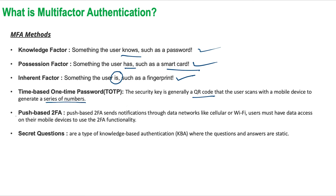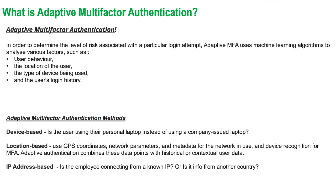Next is push-based 2FA, which sends authentication notifications over the network. This requires your mobile to have network connectivity to the end server. Another popular method is the secret question, where users can set questions to answer and verify their identity.